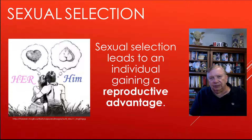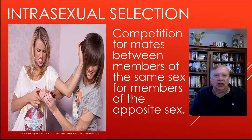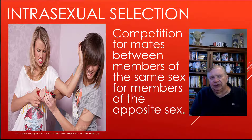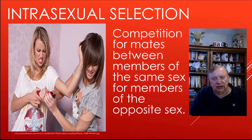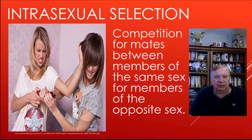There are two subcategories of sexual selection. The first is intrasexual selection — competition for mates between members of the same sex for members of the opposite sex. In the case of the Irish elk and many other animals, they meet on a mating ground called a lek. Males typically show up early on the lek and fight for dominance, then the dominant males stay and mate with the females while the others leave.